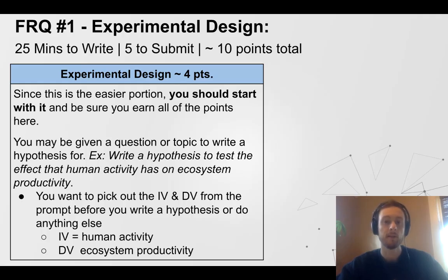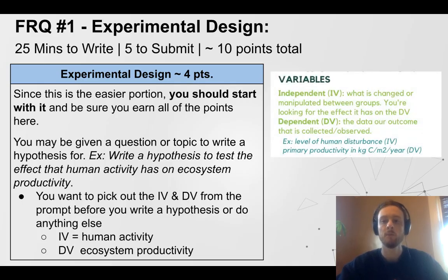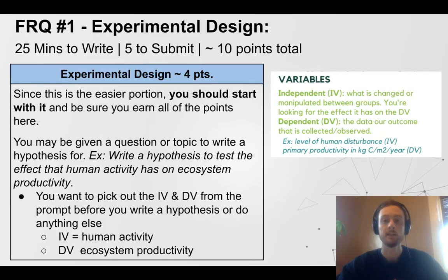For example, if the prompt is to test the effect that human activity has on ecosystem productivity, our independent variable is human activity because that's what's changing — that's what's having an effect on ecosystem productivity. Our dependent variable is ecosystem productivity; that's the outcome or the data we will collect to measure the effect of human activity. Remember: IV is what's changed or manipulated between the groups, DV is the data or the outcome. I like to think: I, the scientist, manipulate the independent variable.